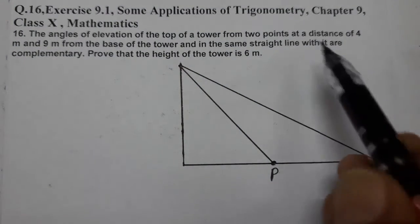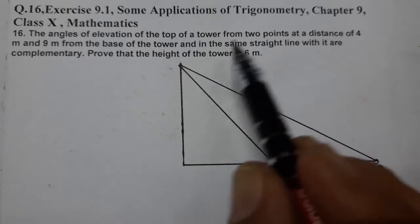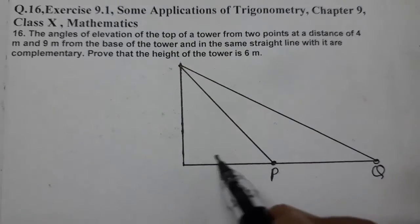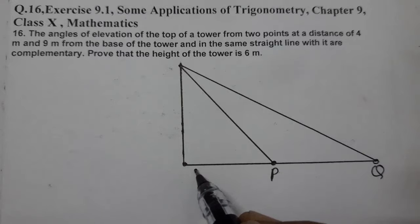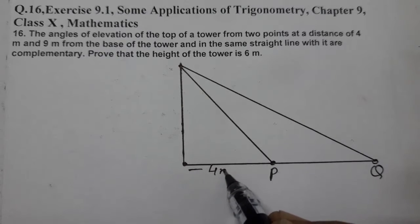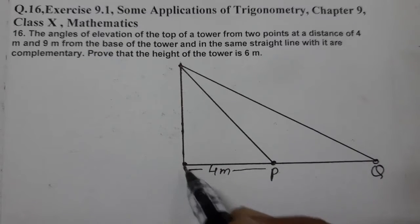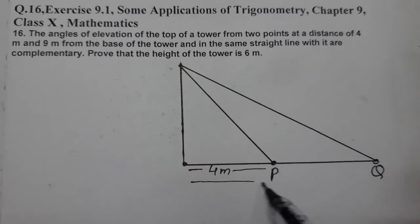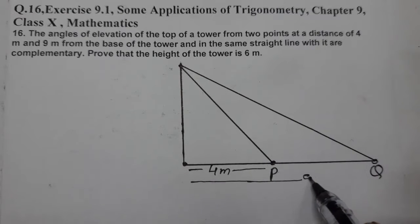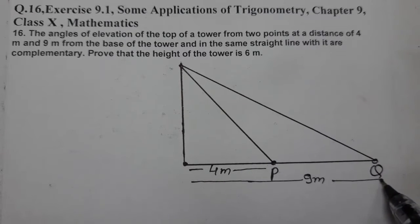The distance from the base of the tower is 4 meters at point P and 9 meters at point Q. So we have 4 meters here and 9 meters distance here.